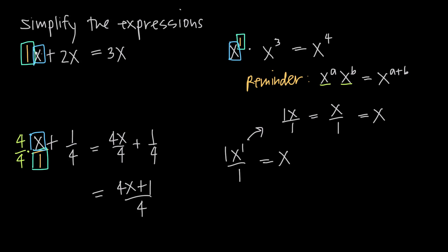In the first problem we needed that coefficient. In the second problem we needed the denominator. And in the third problem we needed to remember that the exponent was there. So the point of this video is: always remember that whenever you see x on its own, it's not just an x by itself — it has these implied 1 coefficient, exponent, and denominator. So we'll see you later.